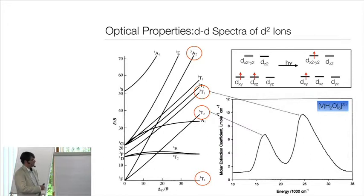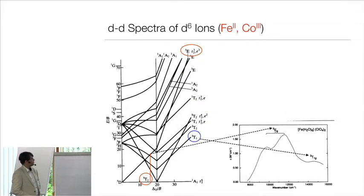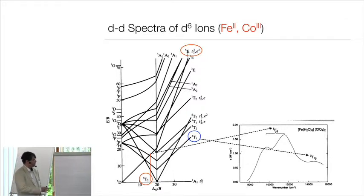Now you can go through all the d^N configurations and look at their properties. The Tanabe-Sugano diagram for d⁶ shows that in the weak-field limit you have a quintet T₂g ground state, and if you go to the absorption spectrum you will find just one other quintet state — the quintet E_g — and that is the spectroscopy you observe: a single quintet T₂g to E_g transition, possibly split by low-symmetry effects.